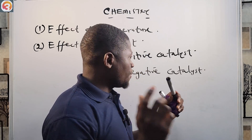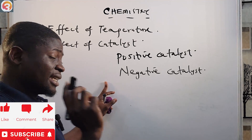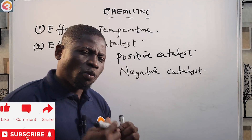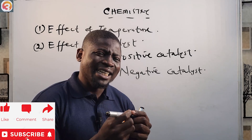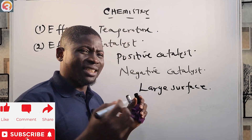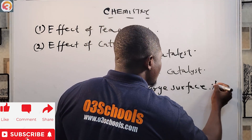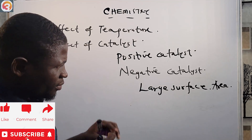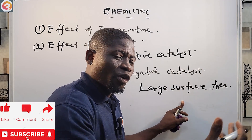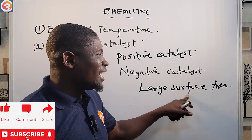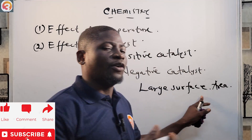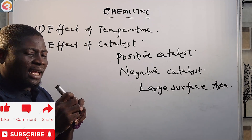What improves the effectiveness of a catalyst is large surface area. Large surface area improves the effectiveness of a catalyst. So the greater the surface area of the catalyst, the greater the rate of reaction. Keep that as a pointer in the back of your mind.